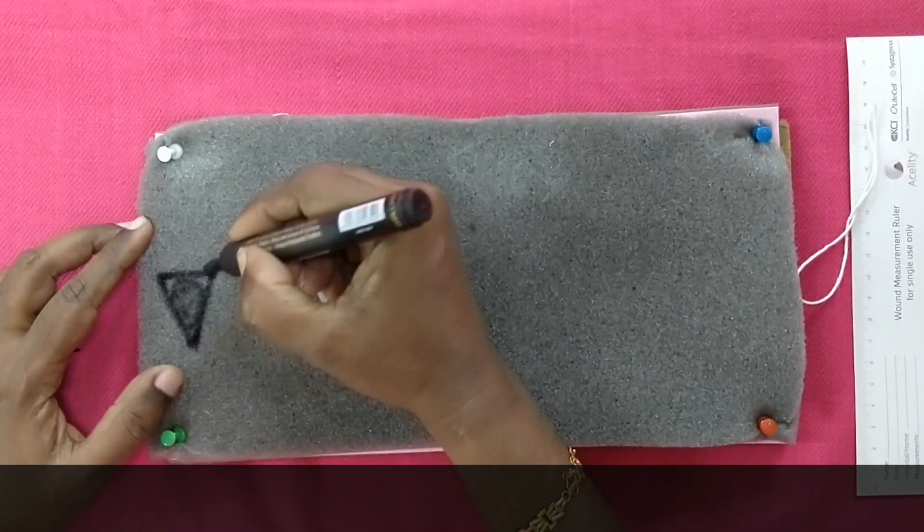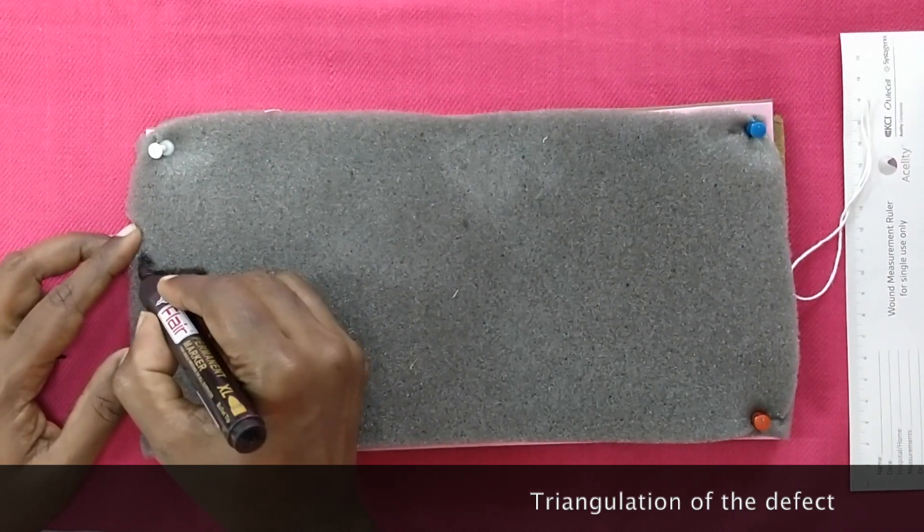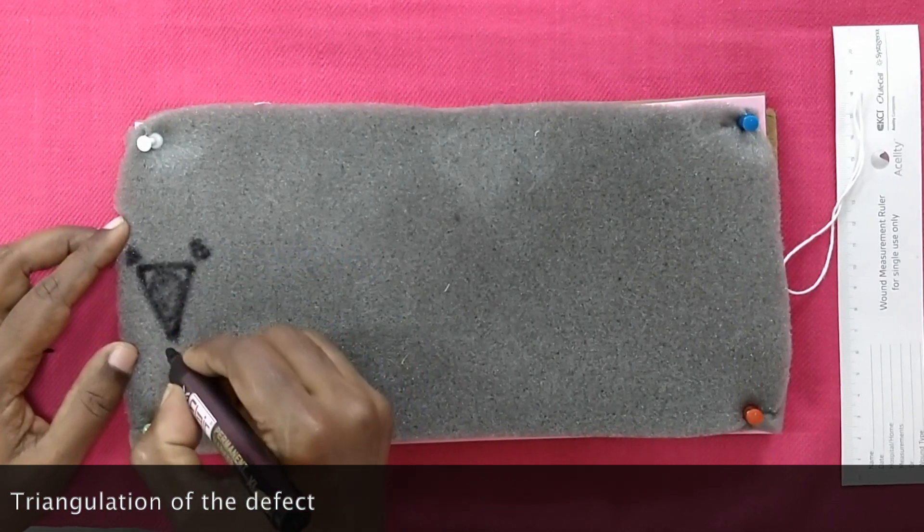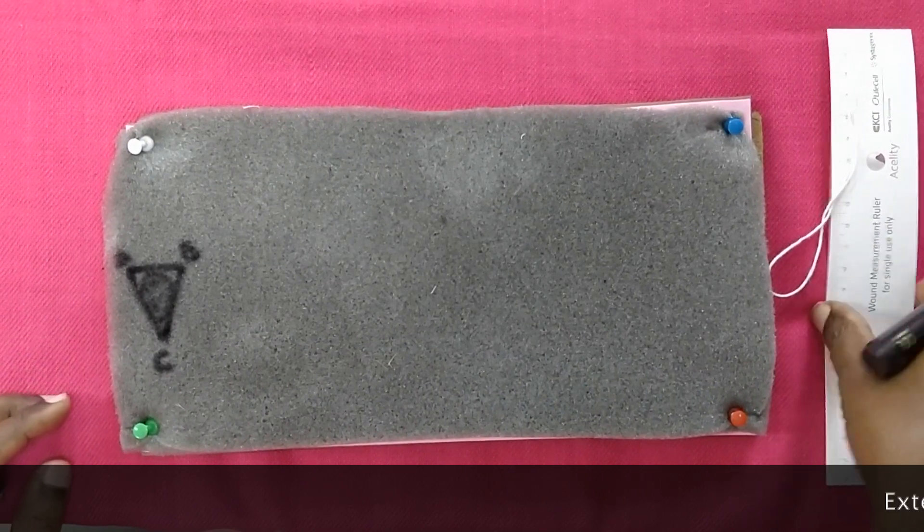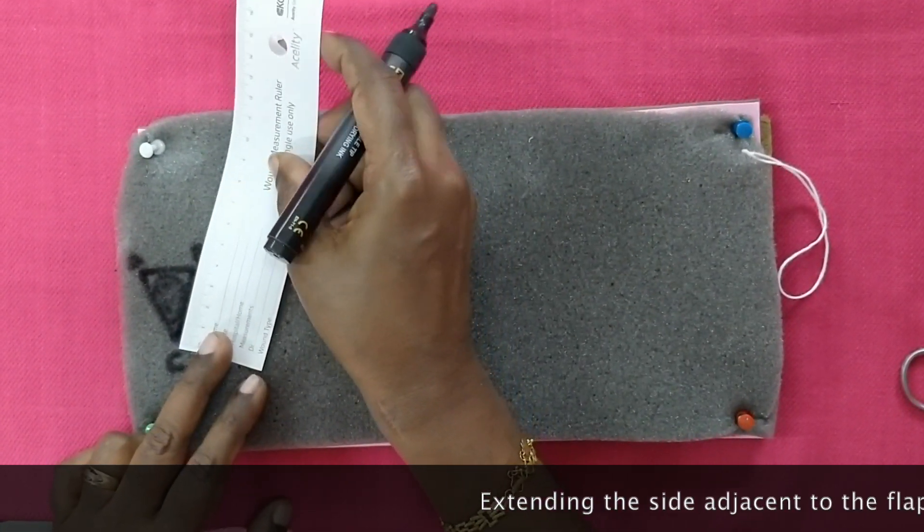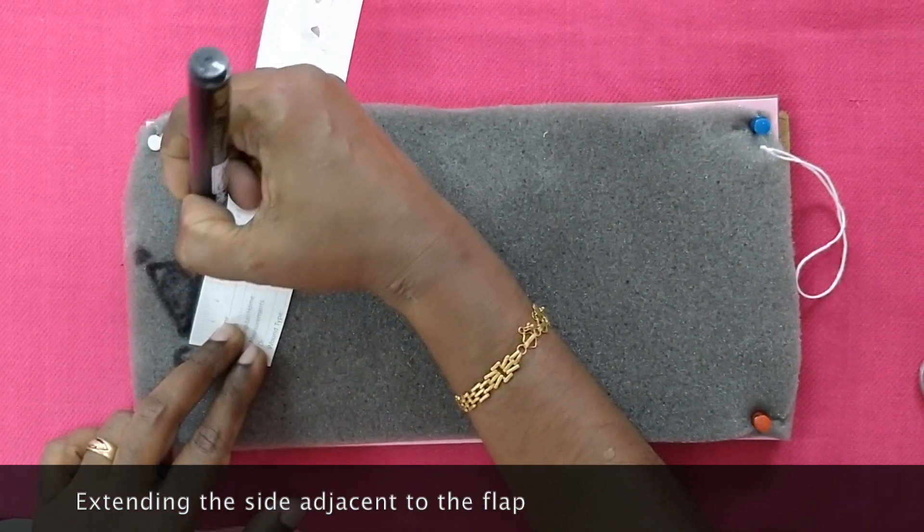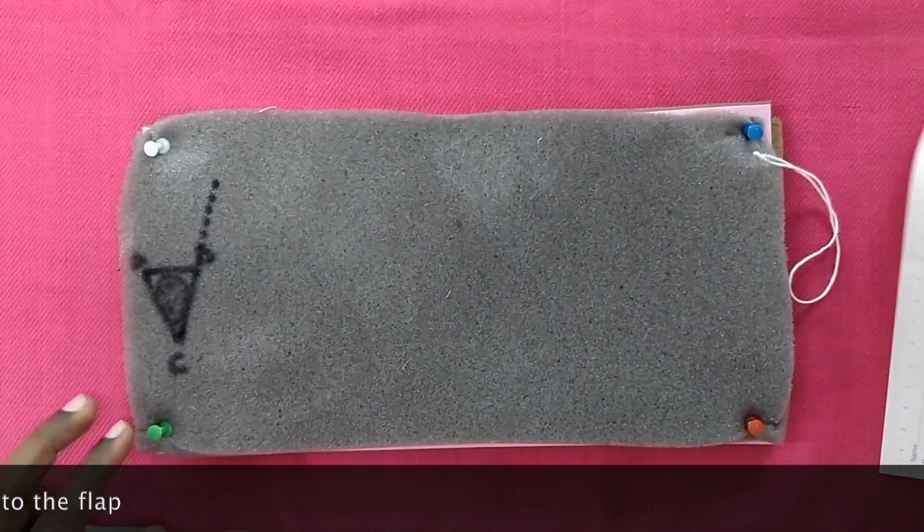This defect has the apex pointing downwards towards us and the base pointing upwards. The sides are A, B and the apex is C. Now we have selected the side of the flap as the side adjacent to BC. So we shall now extend the line BC away from the base.